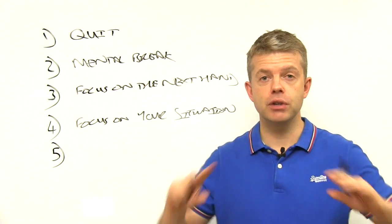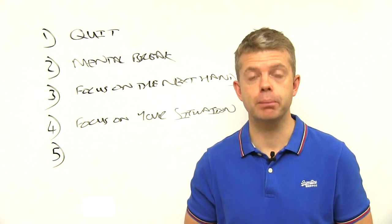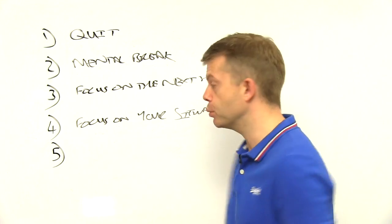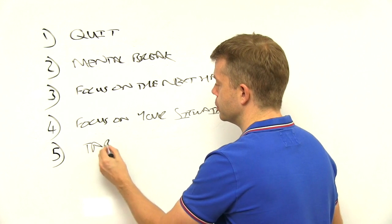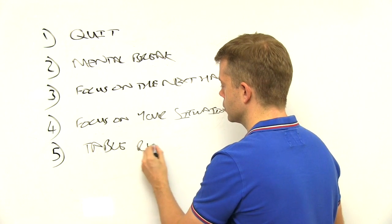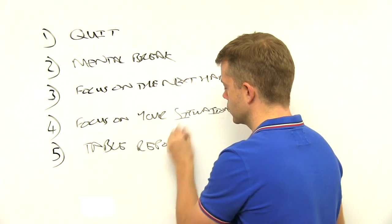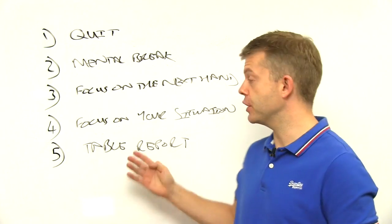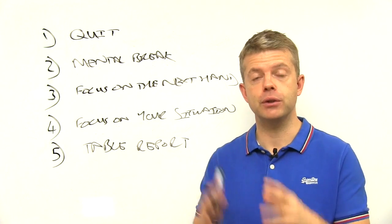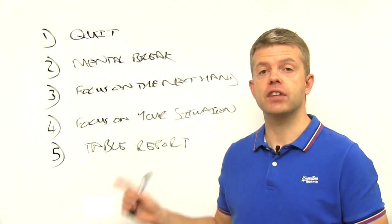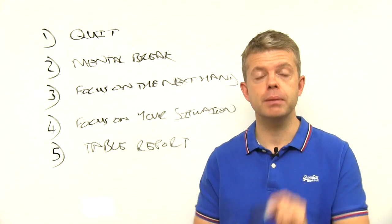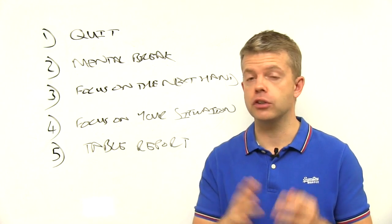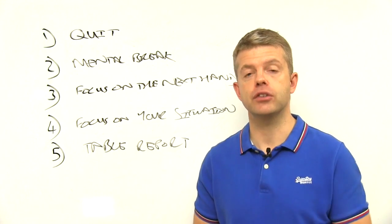And then finally, to get you really back into the game and thinking about the positive opportunities you have, you're going to do a table report. This is one of my favorite techniques. If you've been on my list for a while, you'd have heard it before. No better time to do it than now when you're refocusing on the opportunity in the game. The table report is where you go around the table, think about each of your opponents—you can do it online or live—and you ask yourself, what are their weaknesses?